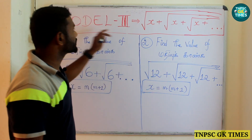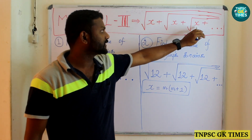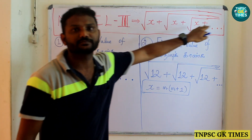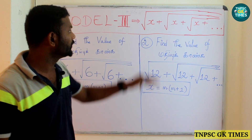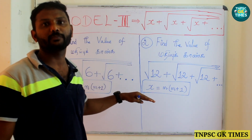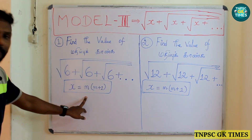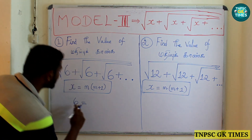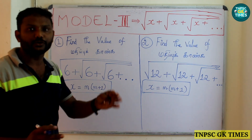Now, Model 3. The structure is: square root of x plus square root of x plus square root of x, up to infinity. There are two sub-models here — one with addition and one with subtraction. We need to know how to derive the answer for each. For the addition case, let's look at how to solve it.